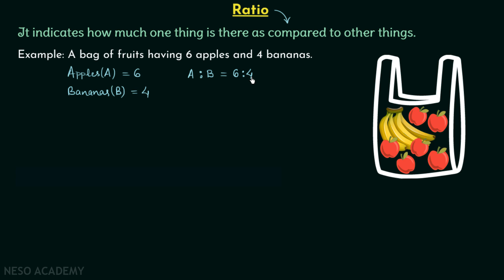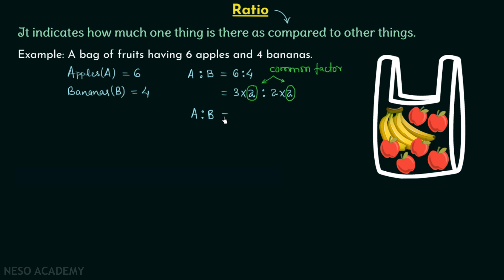Now when you observe 6 and 4, you will find 6 can be written as 3 multiplied by 2, and 4 can be written as 2 multiplied by 2. Here you will find 2 is common — we call this the common factor. This common factor is usually not present in the ratio; we write the ratio in the simplest form. So we will have A ratio B equal to 3 ratio 2. This common factor is a very important concept in ratio.